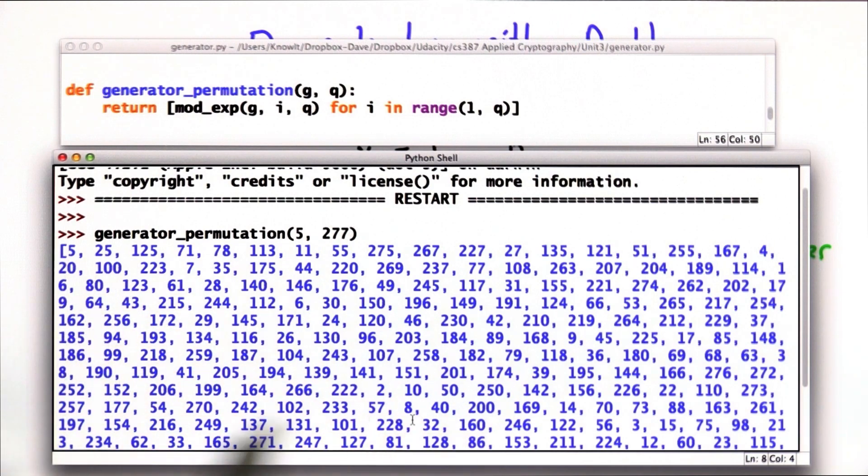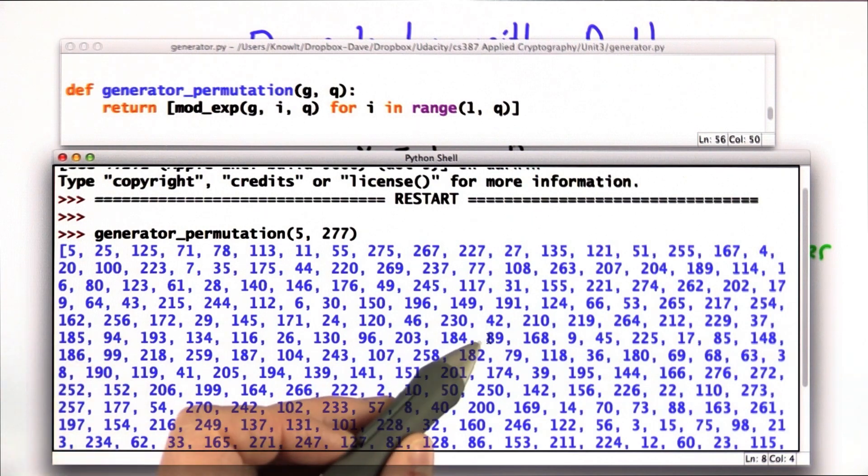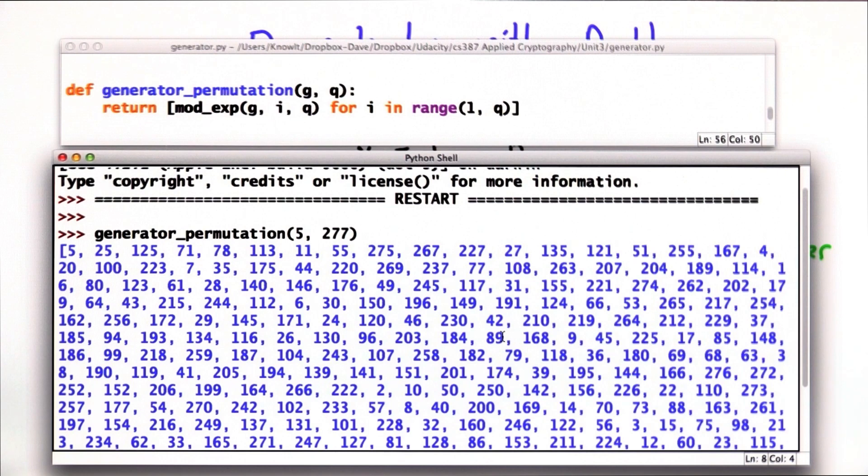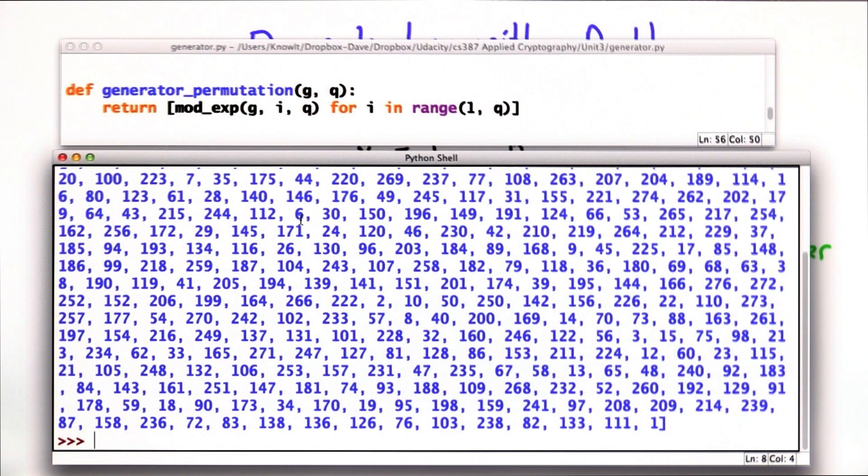Other than the early ones, it would be fairly hard to predict where a number is in this sequence. You could certainly compute the whole sequence to find it. The question the discrete log is asking is, given a number, can you figure out where it would be in this sequence? Or can you figure out the power that you need to raise the generator to, to find it? And the claim is that that's hard to do.